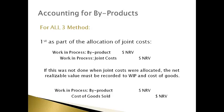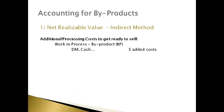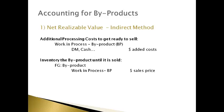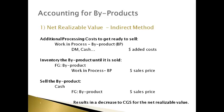If this was not done previously, the net realizable value must be recorded to WIP now and cost of goods sold is decreased. Most textbooks and practice problems record the entry as if it was not done in the allocation process. Further processing costs incurred are added to the work-in-process account. When the byproducts are ready to sell, they are moved from work-in-process to the finished goods account. When the product is sold, the company receives cash and reduces the finished goods inventory account. The net result of all four journal entries is that cost of goods sold is lower by the net realizable value of the byproduct.